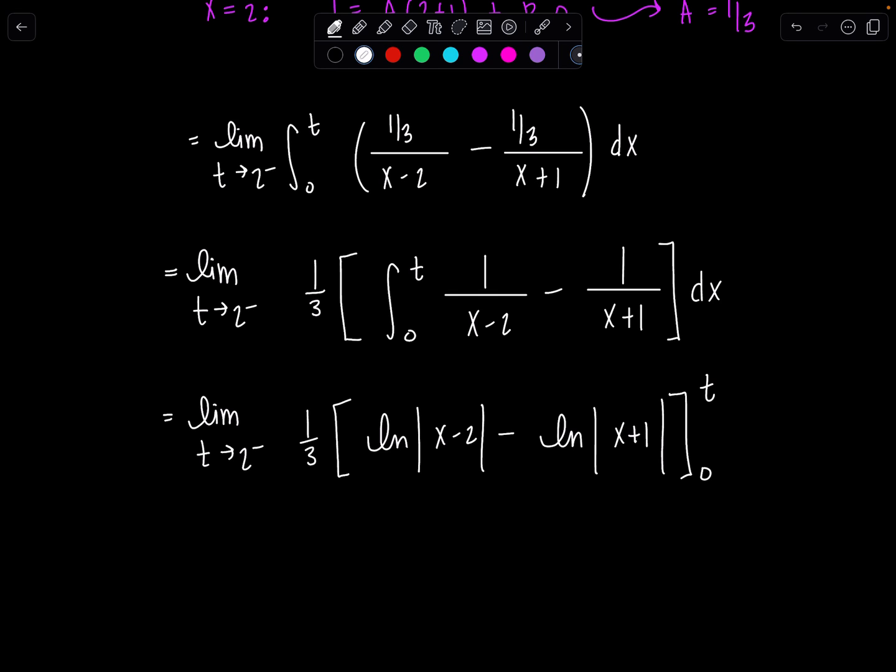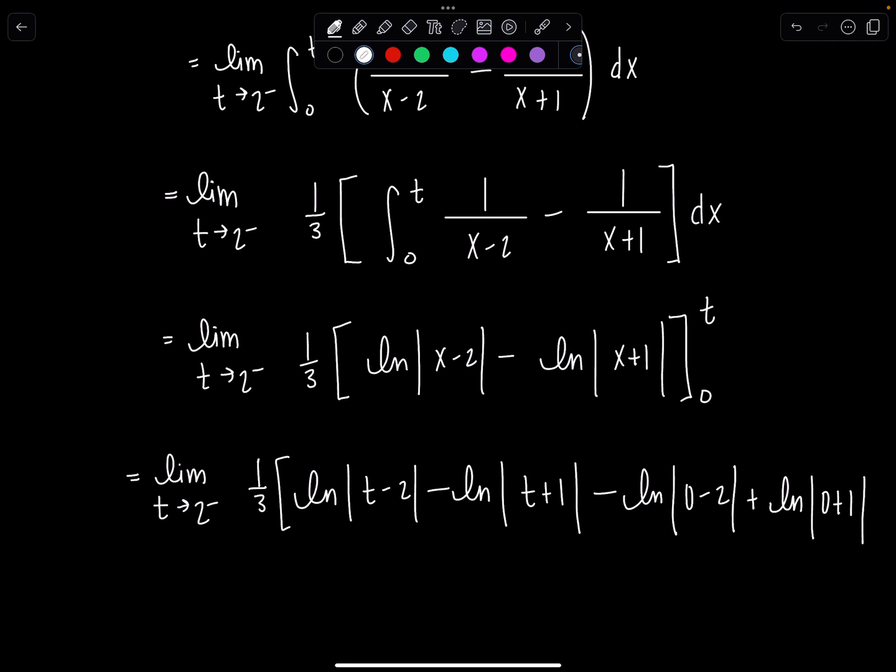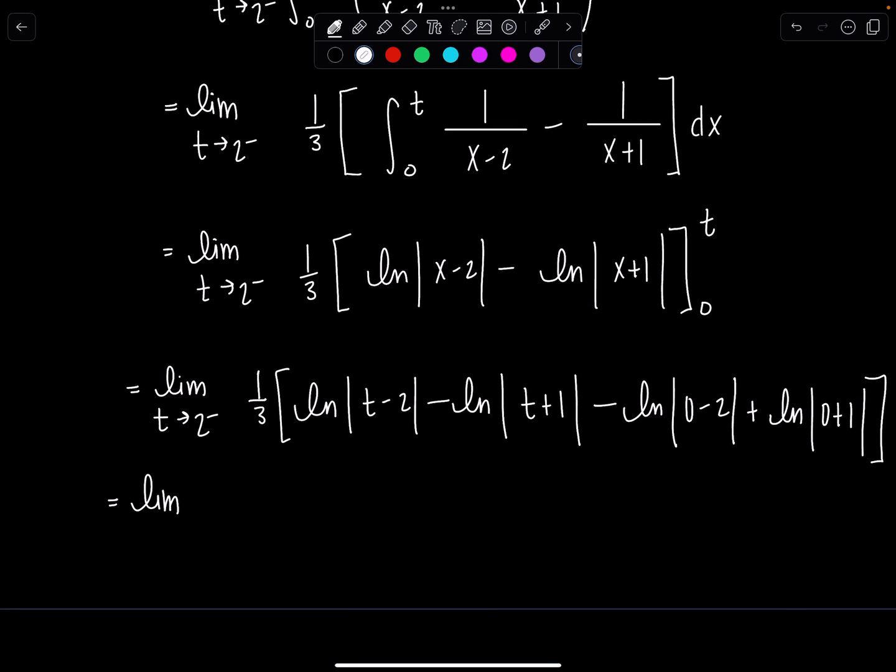Very good. Now let's see here. Let's plug in the limits and then keep cleaning up. So we have limit T goes to 2 from the left of one third times natural log absolute value T minus 2 minus natural log absolute value T plus 1. Now I'm going to plug in 0, minus natural log absolute value 0 minus 2. Minus a minus makes this plus, plus natural log absolute value 0 plus 1.